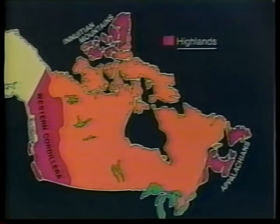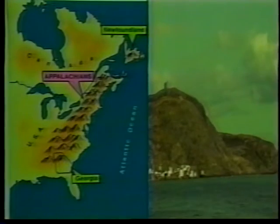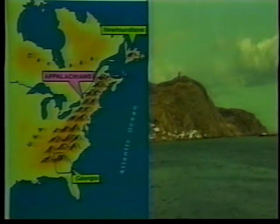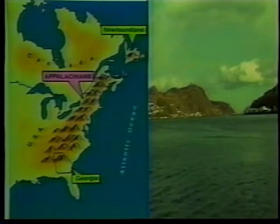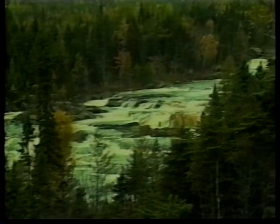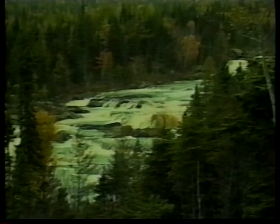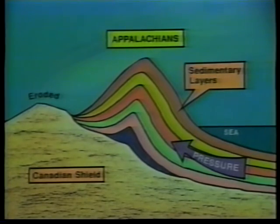The highland areas of Canada can also be divided into three main regions: the Appalachians, the Inuitian Mountains, and the western Cordillera. The Appalachians are part of a mountain system that stretches from the southern United States up into the Maritimes and Newfoundland. They are the oldest highland region in Canada, having formed about 200 million years ago during the Mesozoic era. They formed when the rock of the area was uplifted and folded to create mountains. The rock is mostly sedimentary, but in some places igneous or metamorphic rock is found.